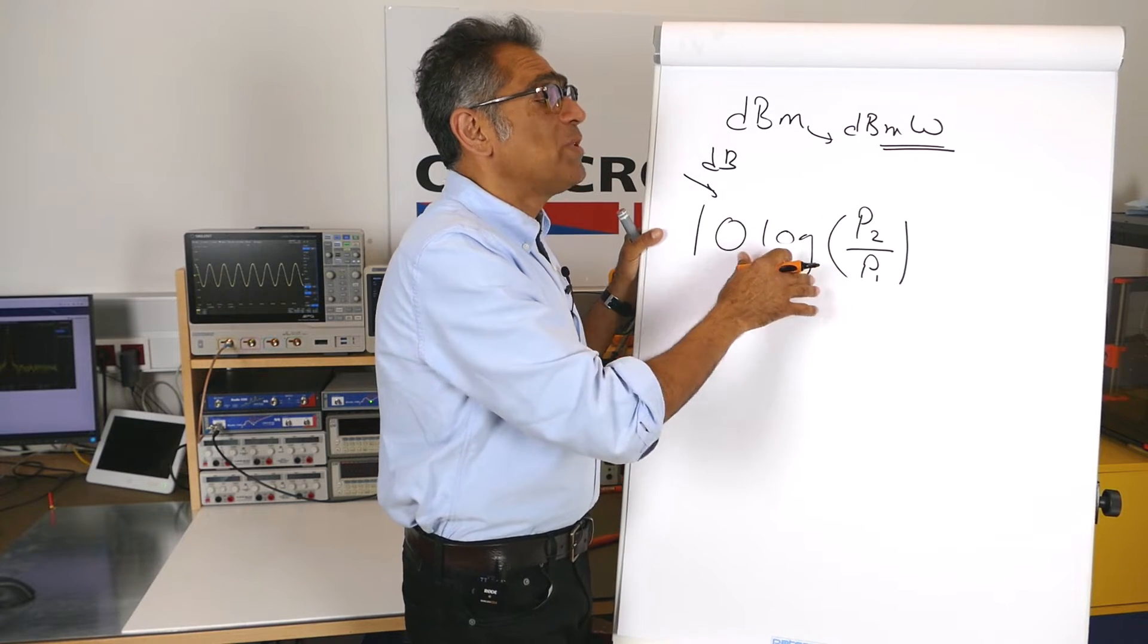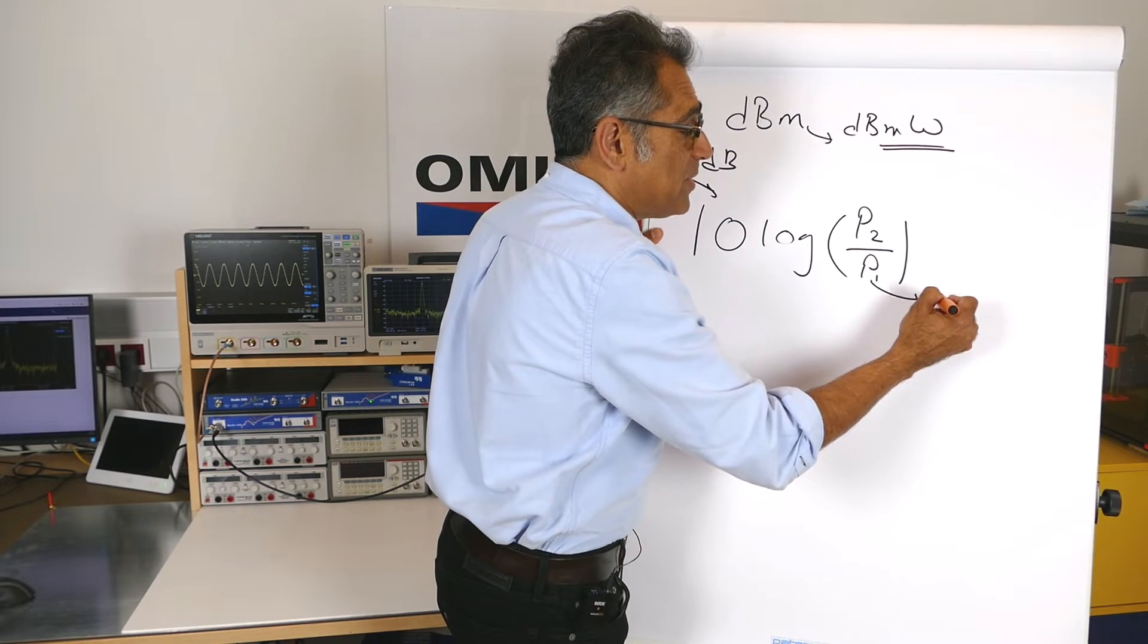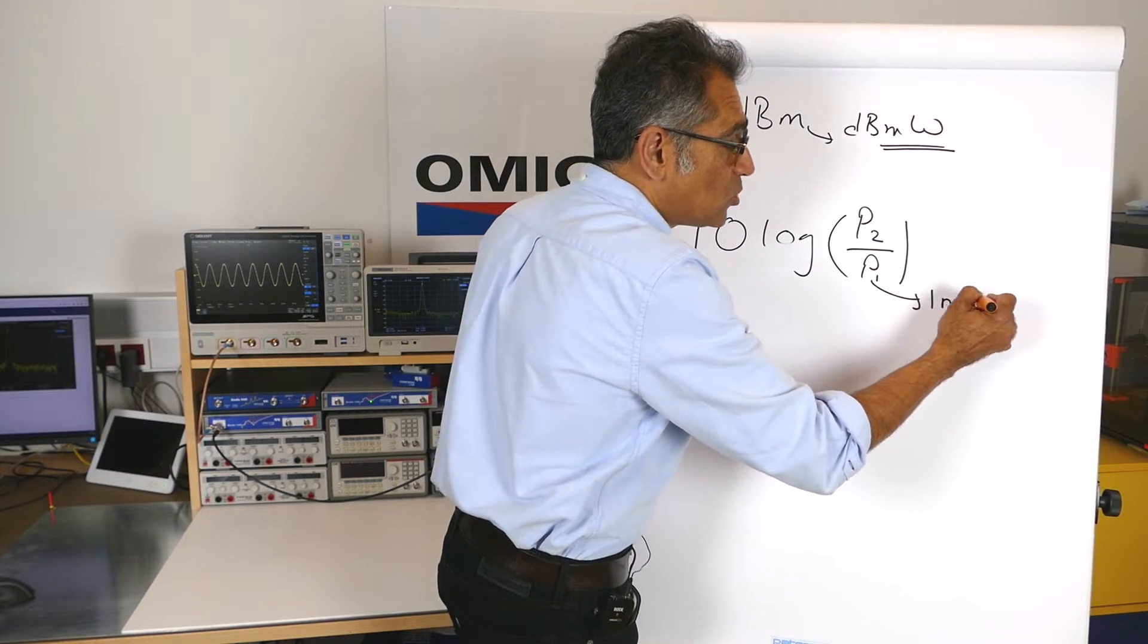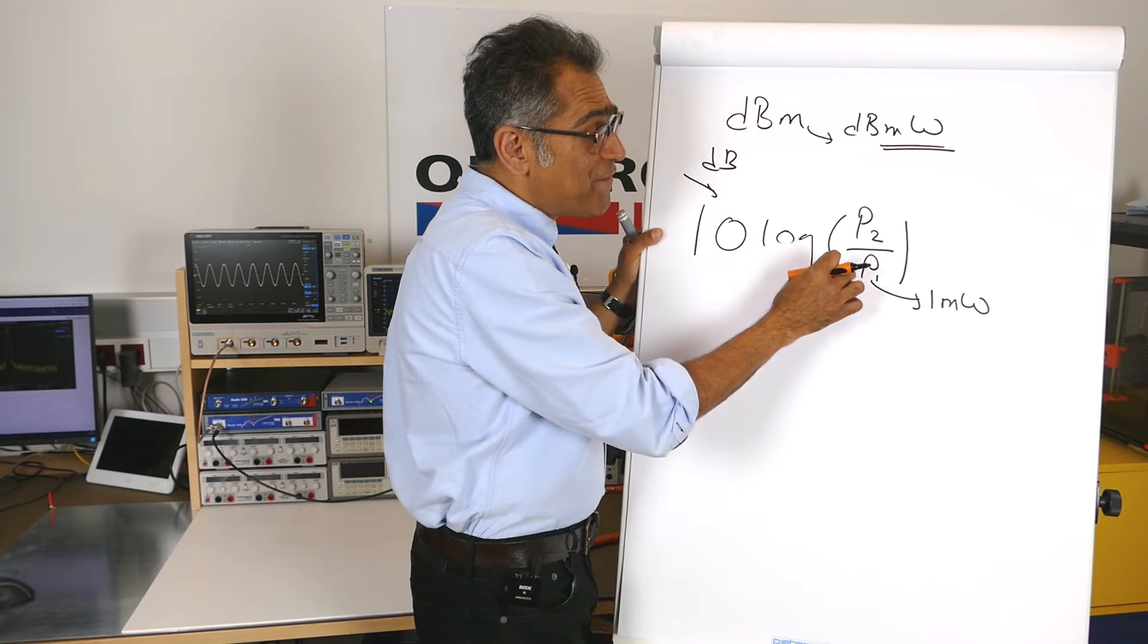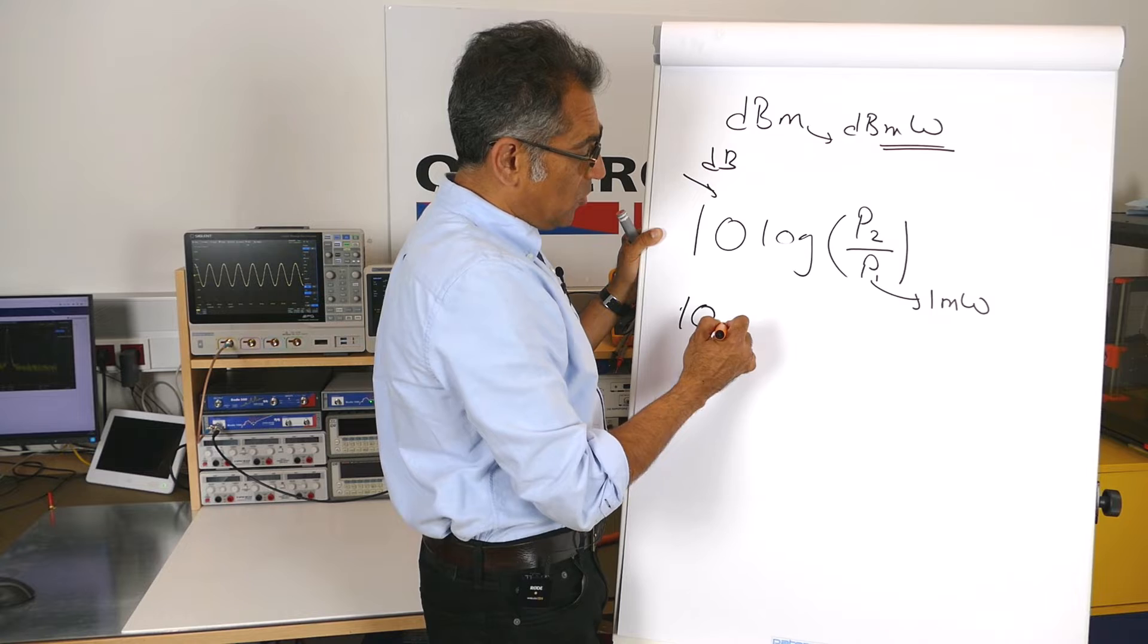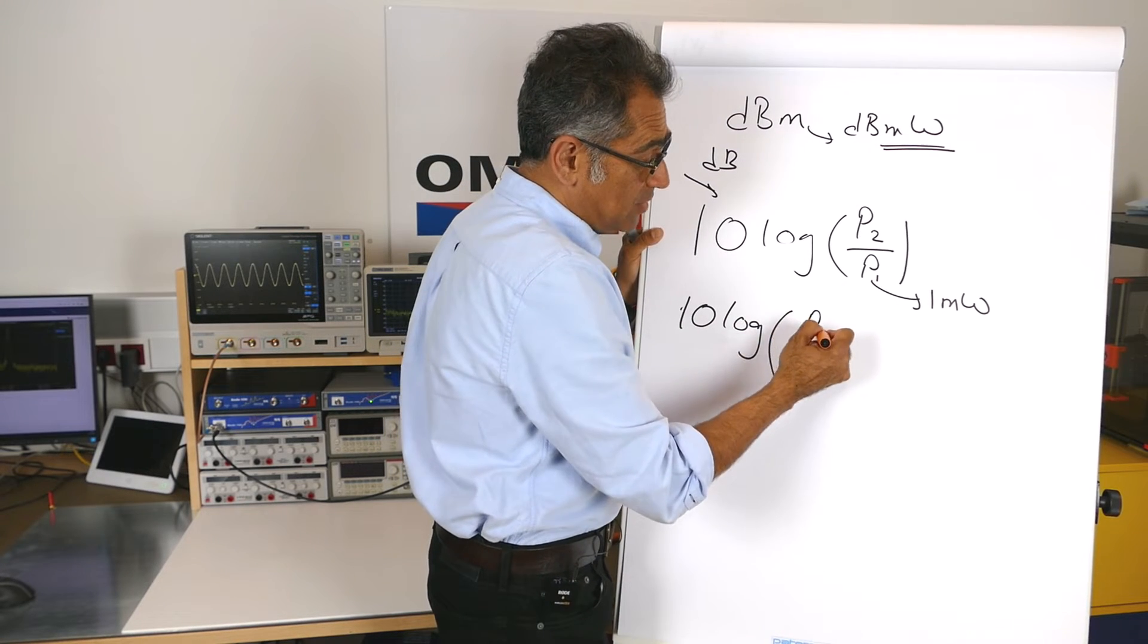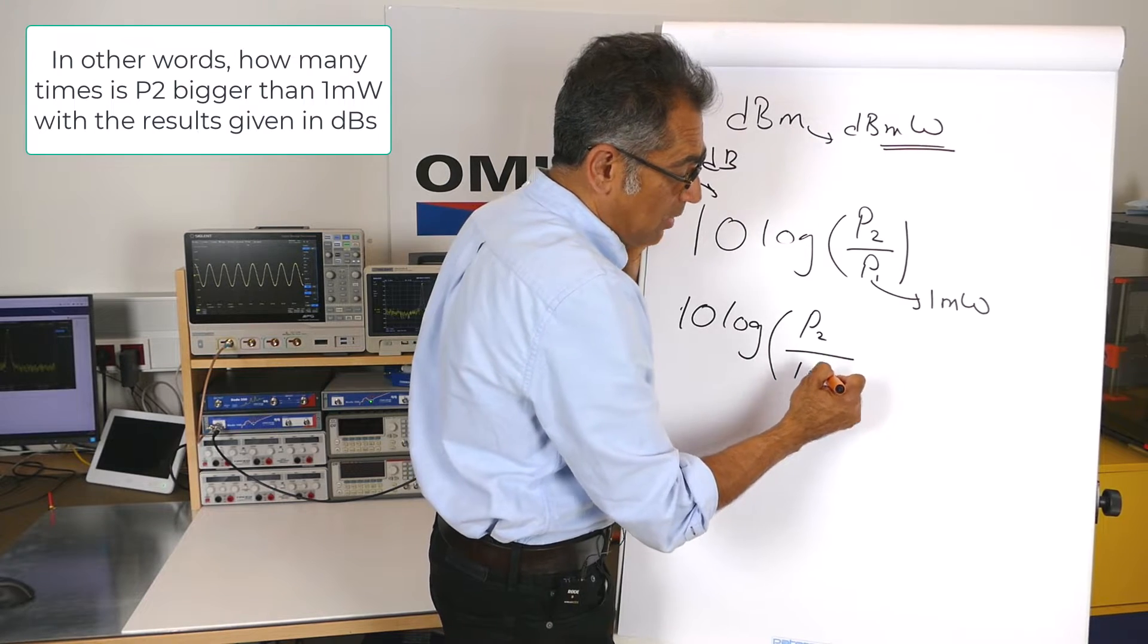However, what we can do is fix this to an absolute value, and in our case, it's going to be dBmW, so to 1 mW. So if I fix this to 1 mW, then my equation will be 10 log of whatever power I'm trying to measure, divided by 1 mW.